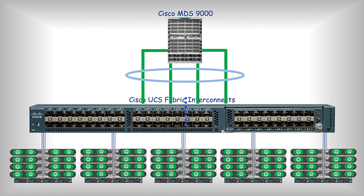The problem was when you have multiple vSANs — let's say servers in vSAN 1, 2, 3, and 4 — because you can have only one uplink in one vSAN, you would need to provision multiple uplinks for those multiple vSANs.